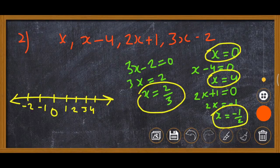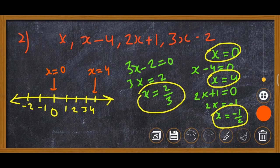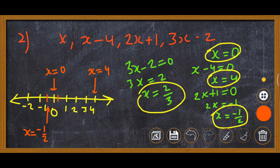Now we will mark: this is x equal 0, this is x equal 4, x equal minus 1 upon 2 — which is between 0 and minus 1, divided into 2 parts, so the line will be drawn here at minus 1 upon 2. The last one is 2 upon 3 — which is between 0 and 1, so that is x equal 2 upon 3. In this way we can show the expressions on the number line.